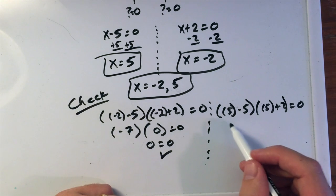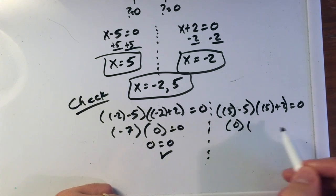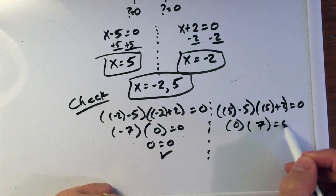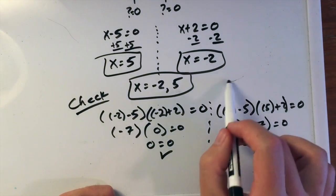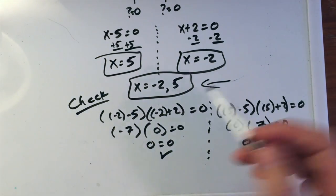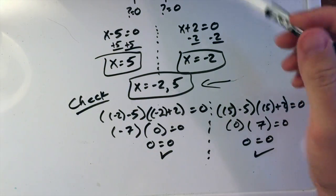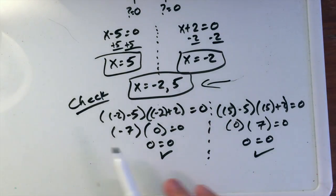So 5 minus 5, that is 0, times 5 plus 2 is 7, equals 0. And 0 times 7 is 0. Our equation is true, and we've checked our work. So our answer here is that x equals negative 2 and 5, and both of these are solutions to the equation above.